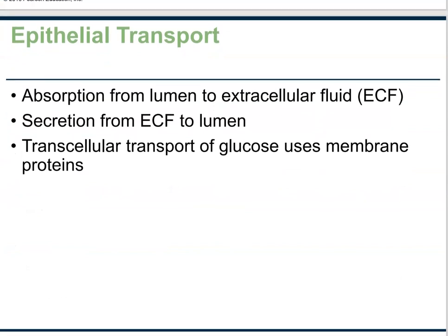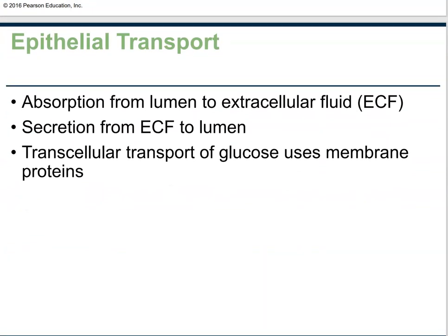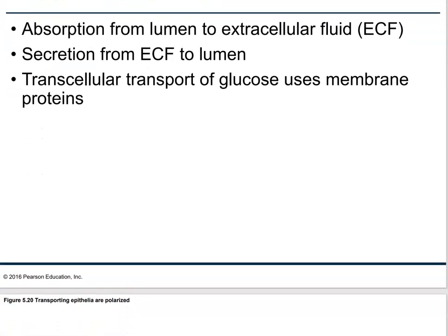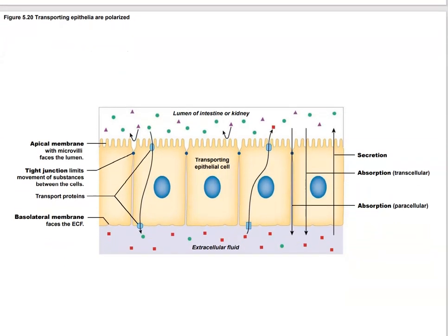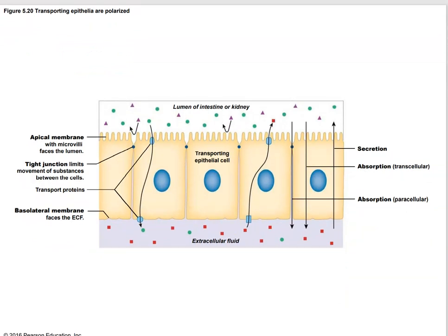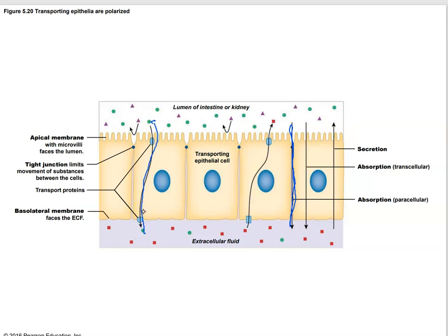Here are examples of both. Paracellular transport means going between cells, using the space between them, if possible. But most of the time we actually need to do trans-epithelial transport — going all the way across the cell. That means absorbing a molecule and transporting it out on the other side, or doing an antiport where one thing going one way is exchanged for another thing going the other way.